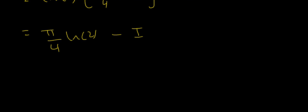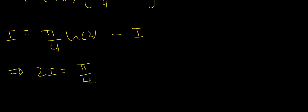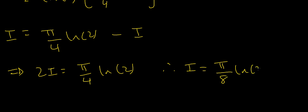So on the left-hand side I have I, and on the right-hand side I have π/4 · ln 2 minus I. Adding I to both sides gives 2I equals π/4 · ln 2. Dividing both sides by 2 gives I equals π/8 · ln 2.